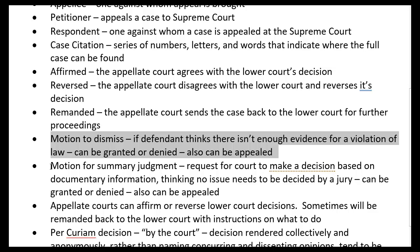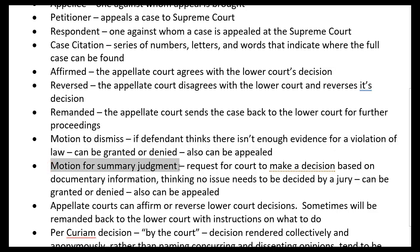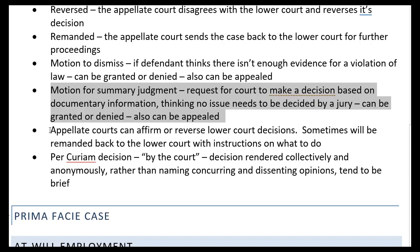The two sides can argue about whether or not that motion to dismiss should be granted or denied. If the motion to dismiss is not successful, oftentimes one party will file for a motion of summary judgment, which means that side doesn't think there's really a need to go through an entire trial — they think the facts presented give enough information for the court to make a decision right then and there. That would significantly lower the amount of time and money involved.